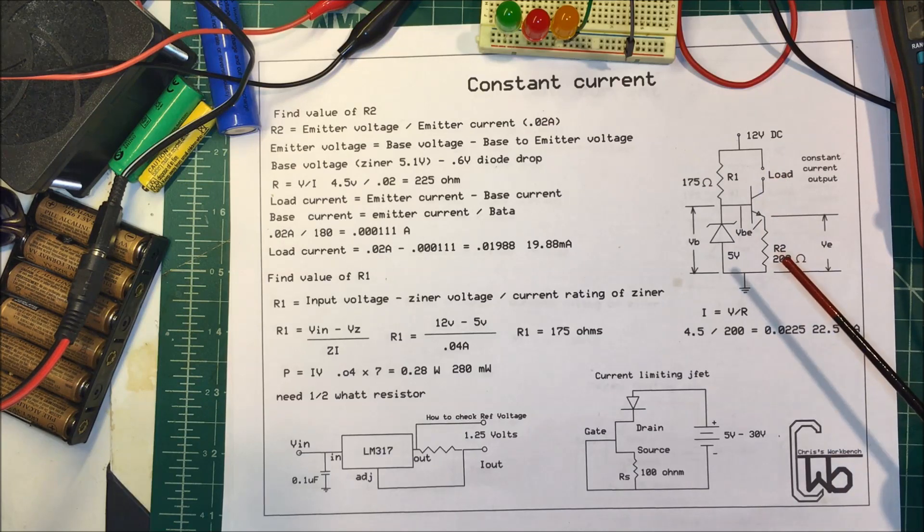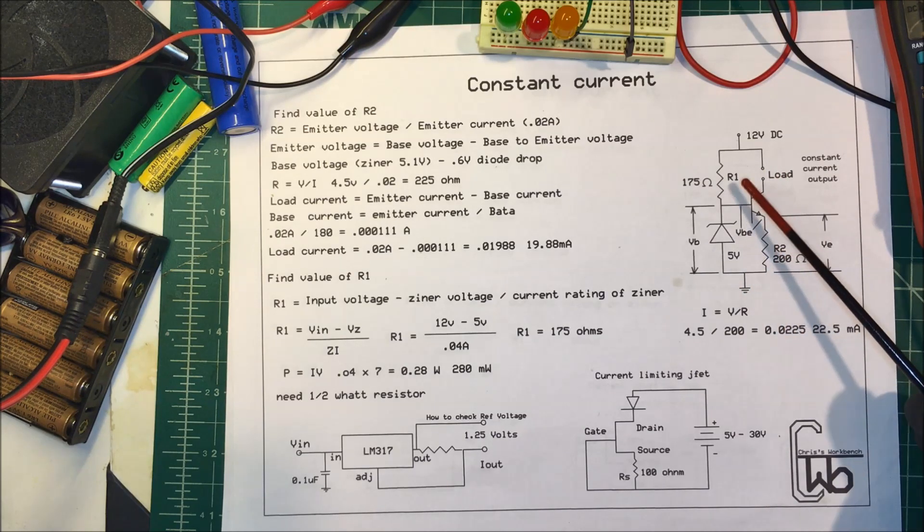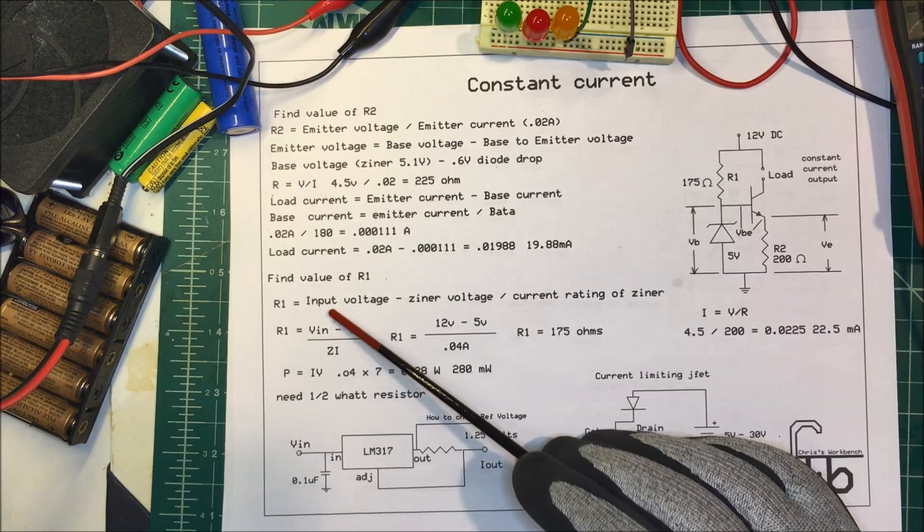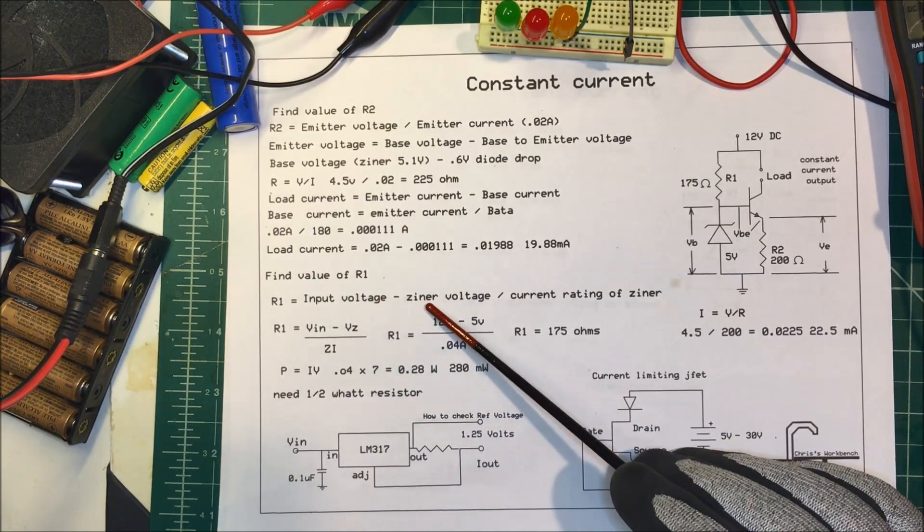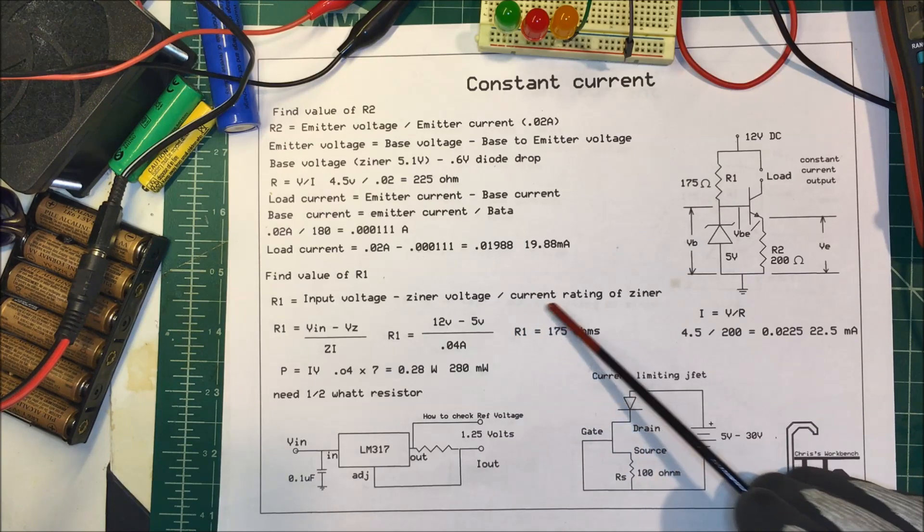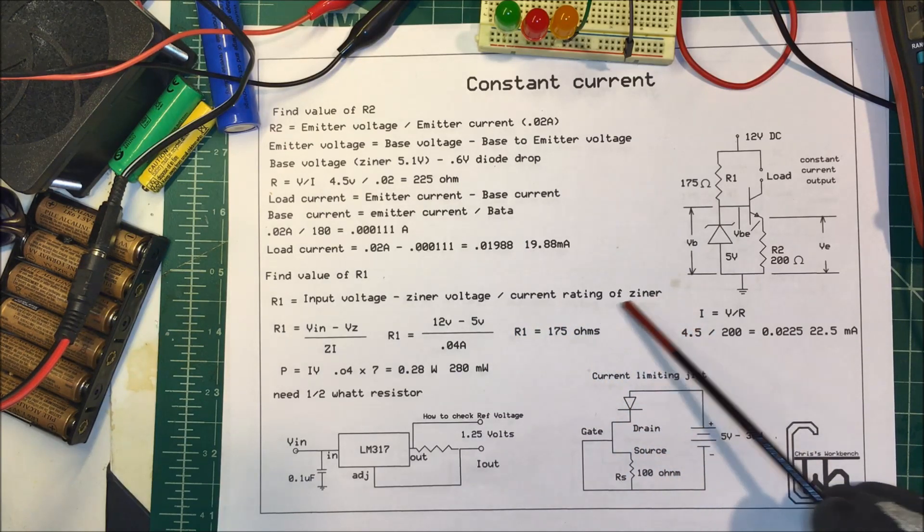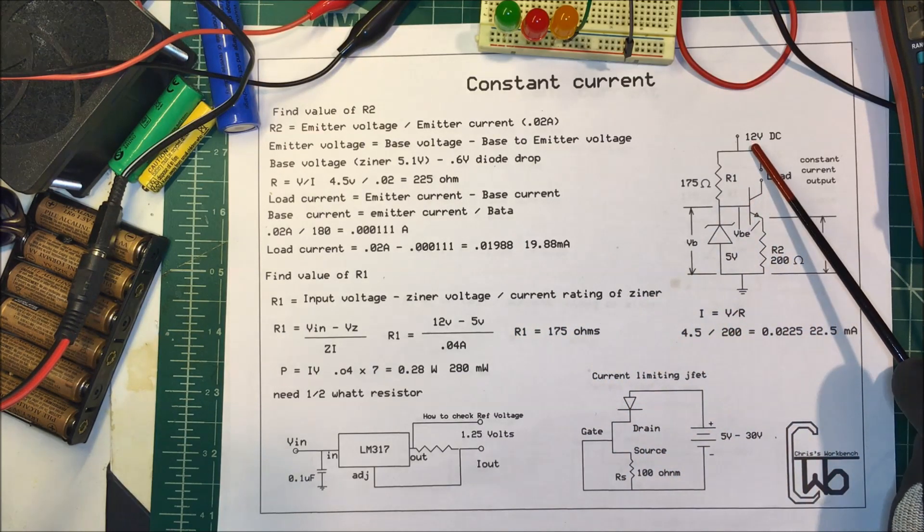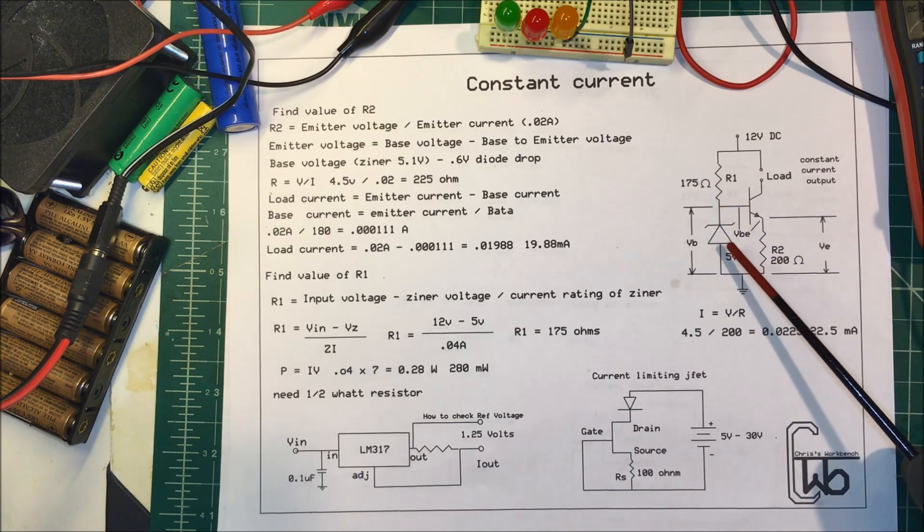Now we want to find R1. R1 equals the input voltage minus the zener diode voltage divided by the current rating of the zener. I'm going to put 12 volts in, and I have 5 volts here, so that means I'm going to have 7 volts dropped across this resistor.